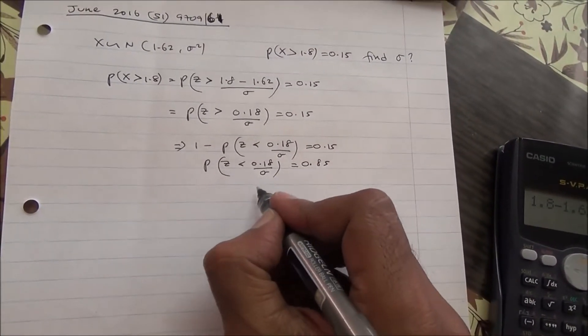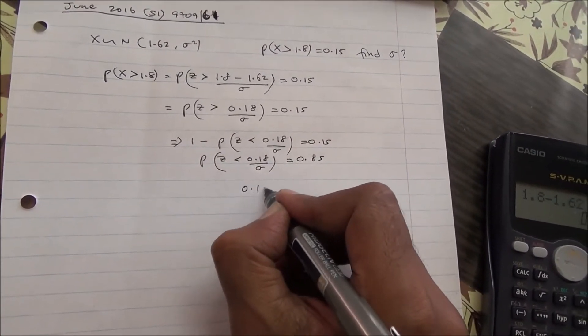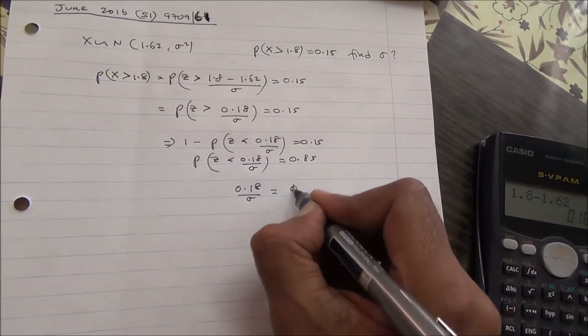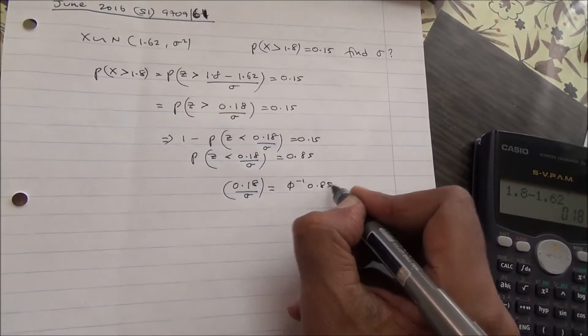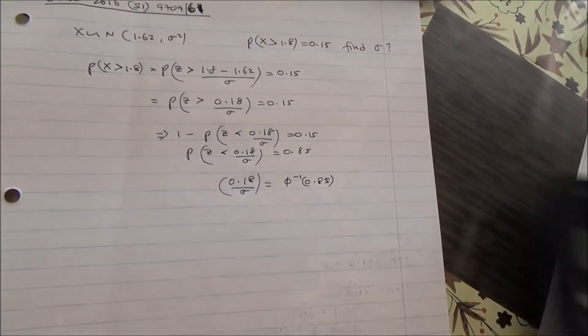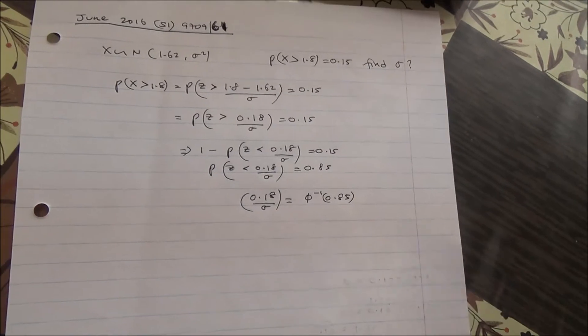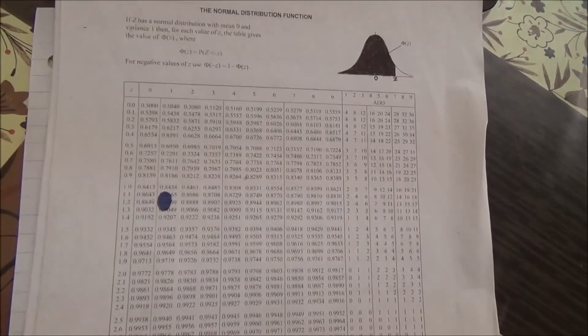Therefore, we can say that 0.18 over the sigma is going to be the inverse of 0.85 from our table. So let's just take a look here, 0.85 inverse.